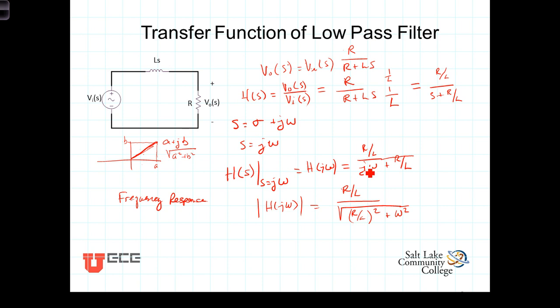The phase of the frequency response, we'll call it theta of j omega, can be found by taking the phase of the numerator. Well, the numerator is a pure real number in this case, so the phase of a pure real number is 0,